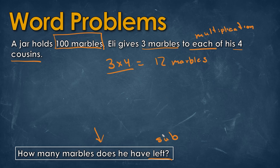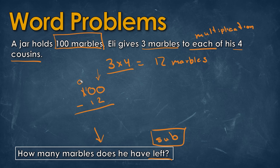With that information, we do subtraction: 100 minus 12. We use borrowing — starting from the right, zero minus two requires borrowing. We borrow from the 10, making it nine, and bring 10 to the ones place: 10 minus two equals eight. Then nine minus one equals eight. So Eli has 88 marbles left.